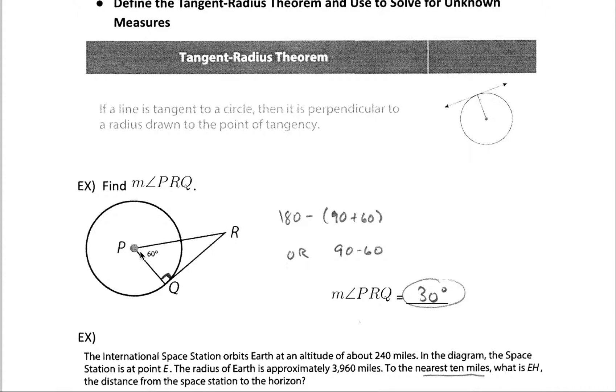Knowing that radius PQ in this example intersects with this tangent line QR at point Q, then we have a right angle there at point Q.